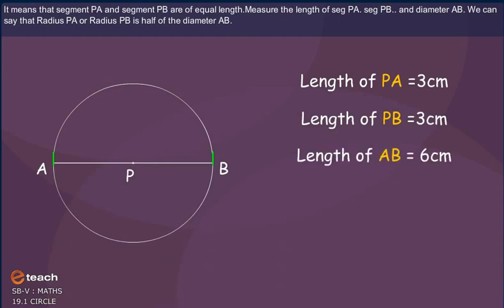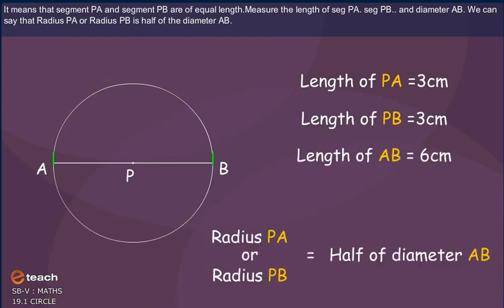Measure the length of segment P, A, segment P, B and diameter A, B. We can say that radius P, A or radius P, B is half of the diameter A, B.